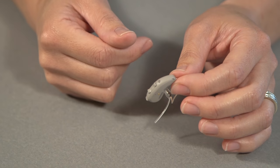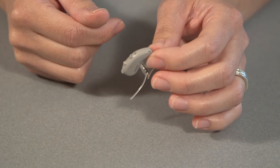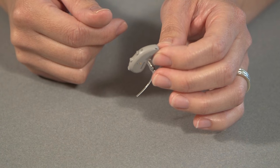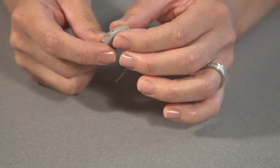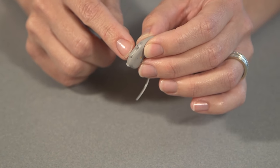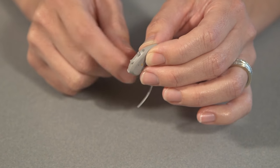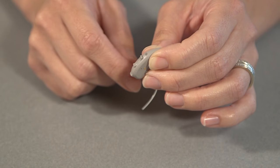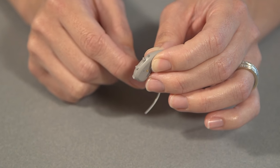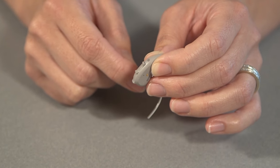If the hearing aid is programmed to also have different programming functions in it, for example, a program for tinnitus, that can also be accessed using the rocker switch. And to do that, you would just do a long press, about two seconds, to access that second program or third program.